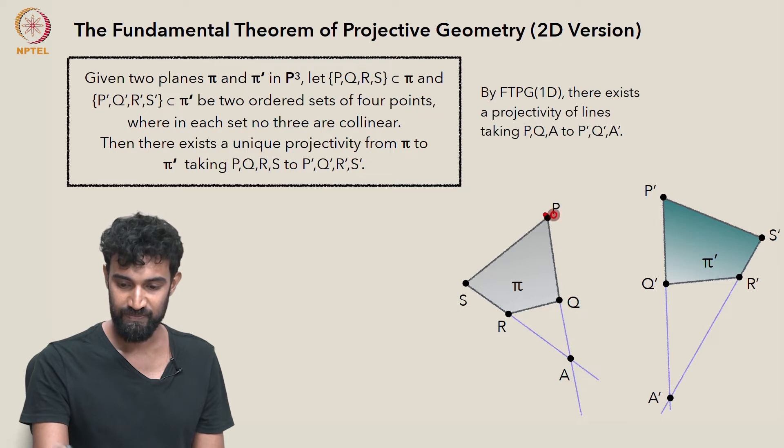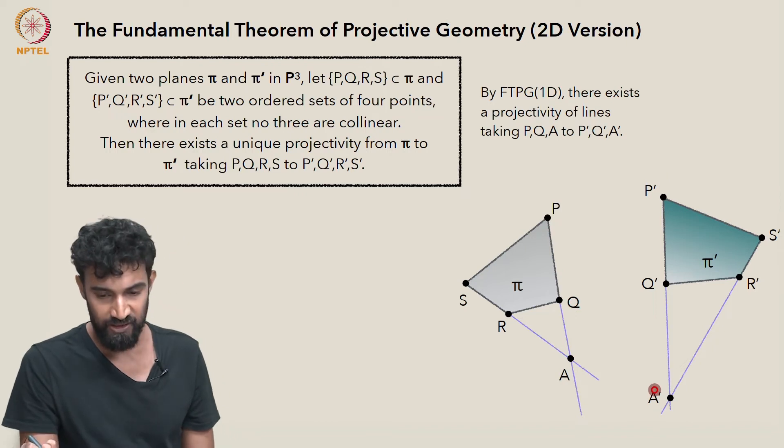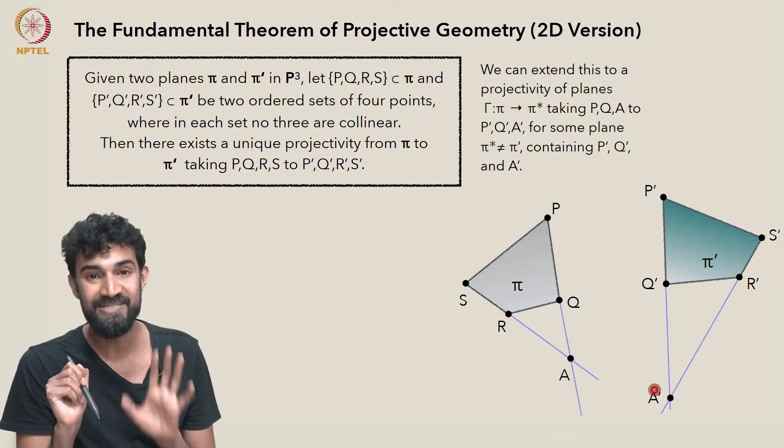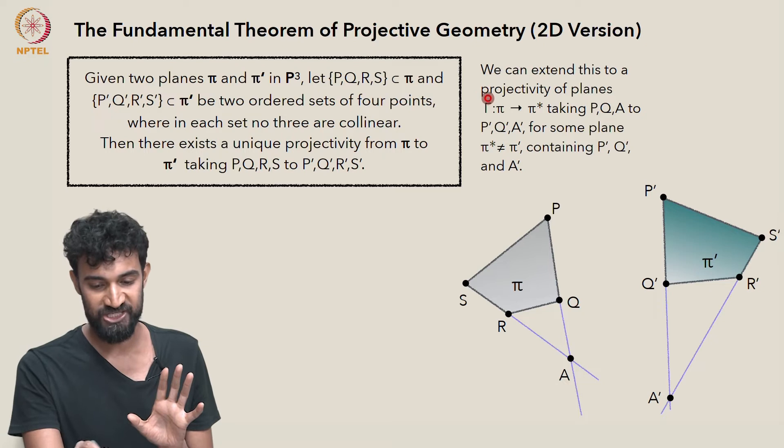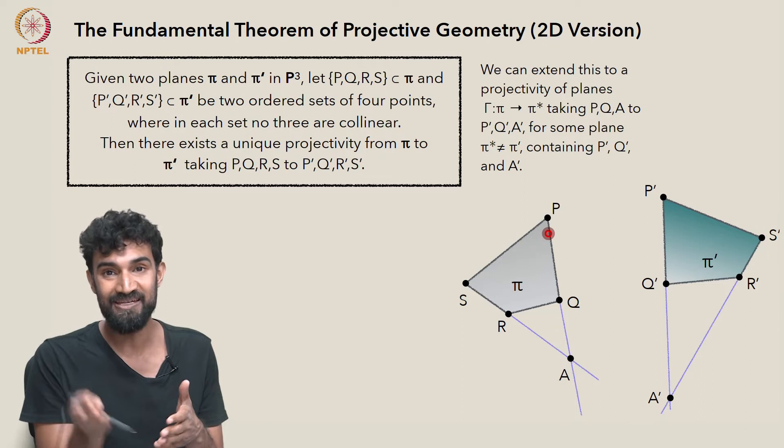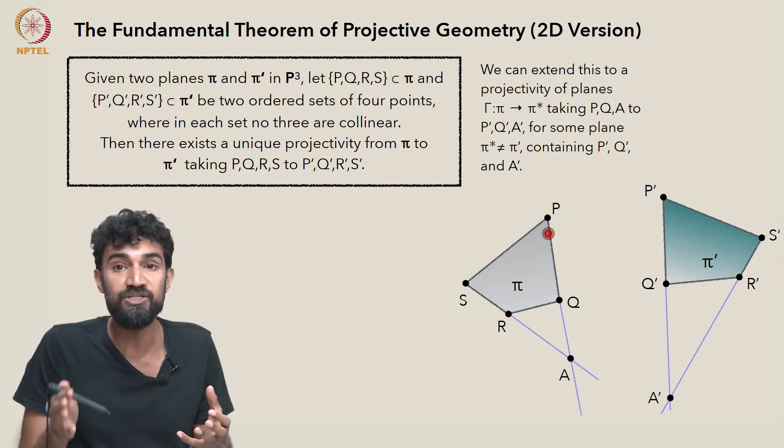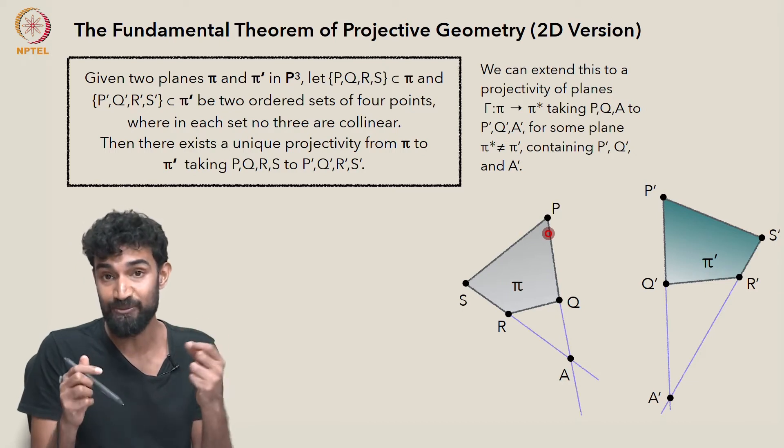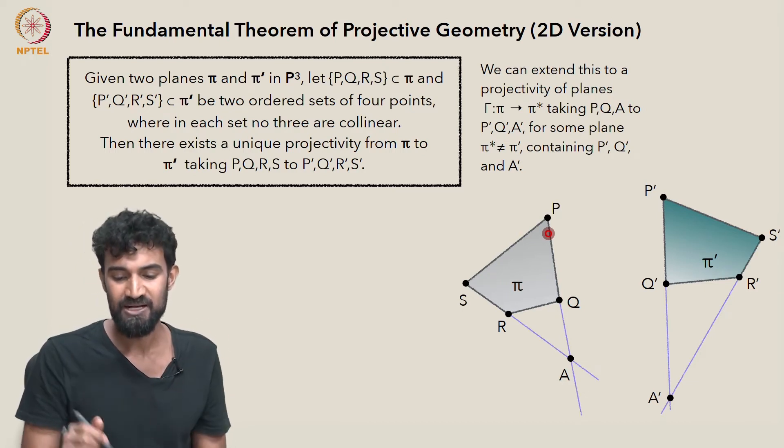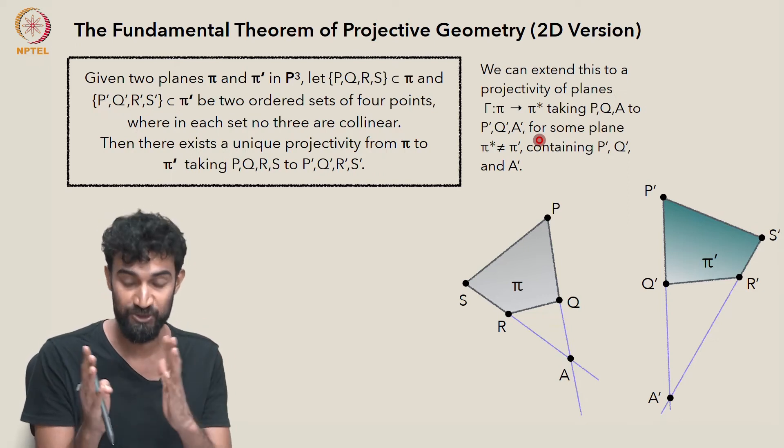It's a projectivity from this line to this line, but we can extend this projectivity to a projectivity of planes, which we'll call gamma. We just need to choose planes that contain each of the intermediary lines, but which don't intersect any of the points of any of the centers of perspectivity. That's relatively easy to do. There's lots of degrees of freedom there in choosing those planes.